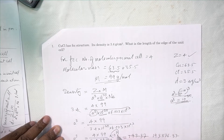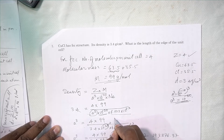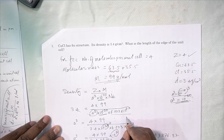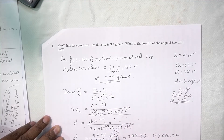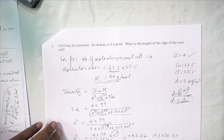The 10 to the power 7 comes because 10 to the power minus 30 moves to the numerator as 10 to the power 30, and 10 to the power 23 moves to the denominator as 10 to the power minus 23. The difference in powers gives 10 to the power 7.